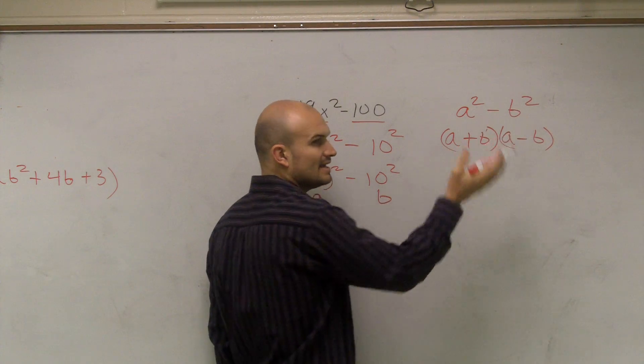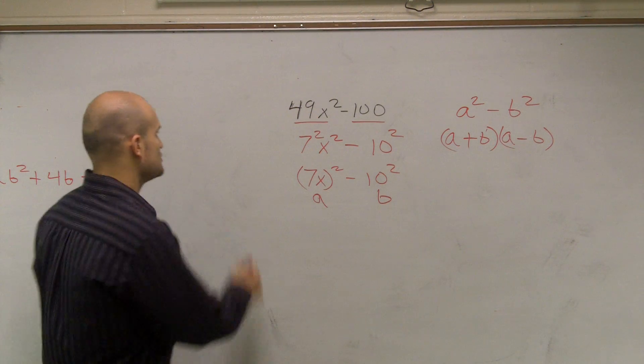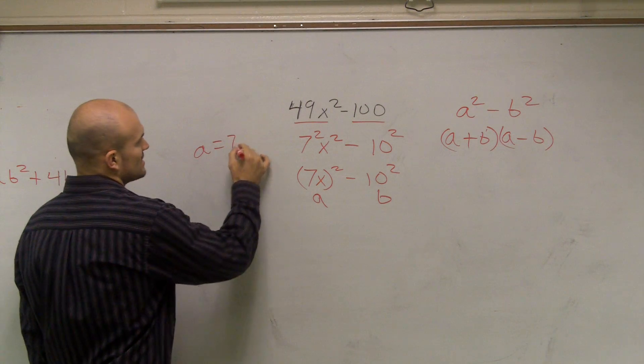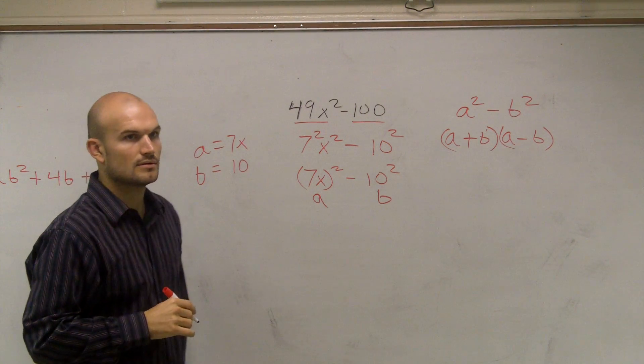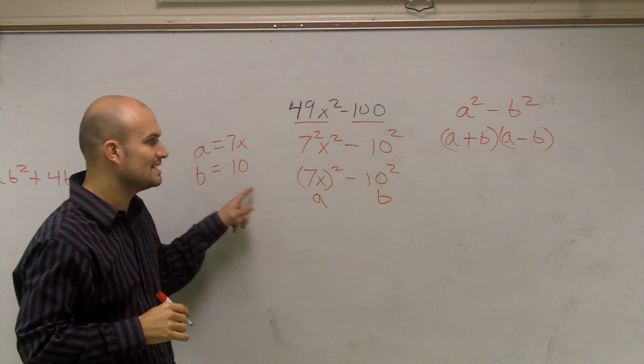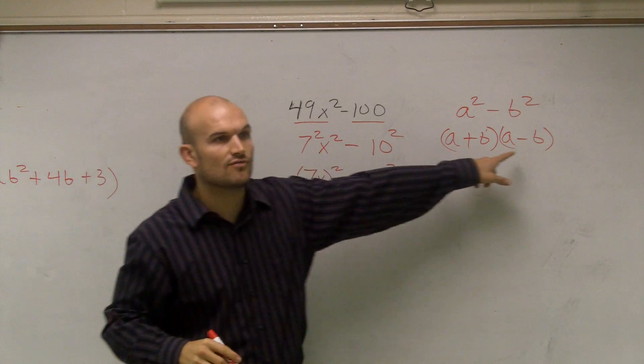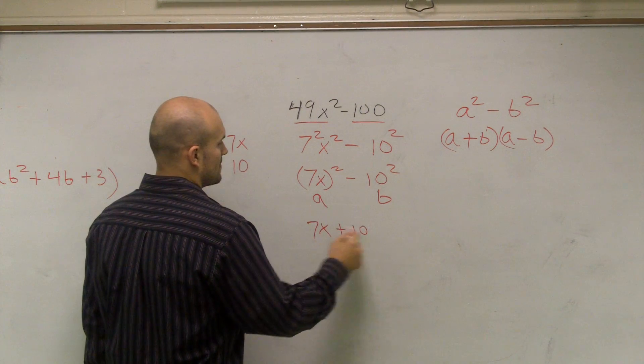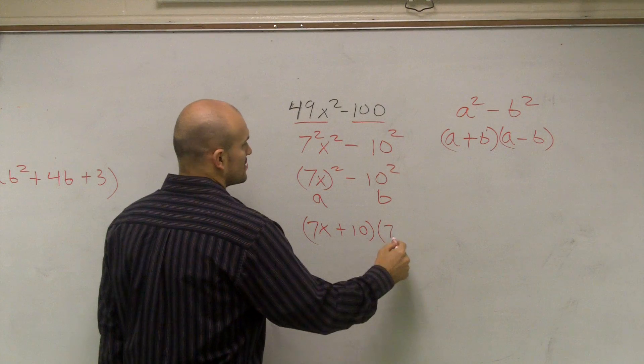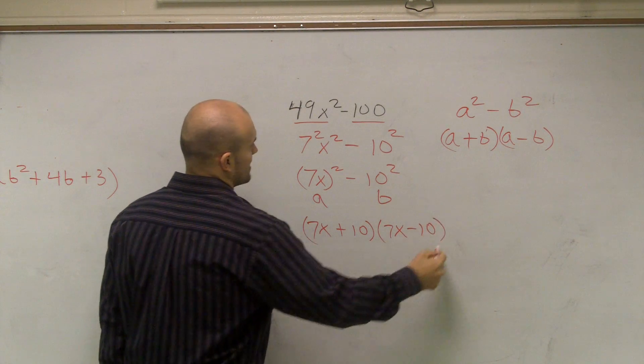And then A, B and B, A cancel out. So ladies and gentlemen, I'm saying A equals 7X, B equals 10. All we're going to do is plug these into this formula to get your answer. So you can say 7X plus 10 times 7X minus 10.